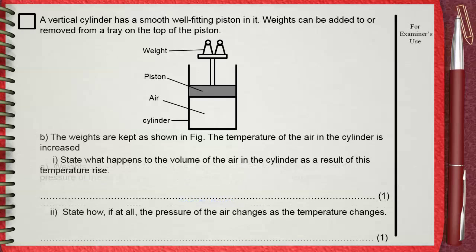Question B. The weights are kept as shown in figure. Here, the temperature of the air in the cylinder is increased. State what happens to the volume of the air in the cylinder as a result of this temperature rise. Double I. State how, if at all, the pressure of the air changes as the temperature changes.